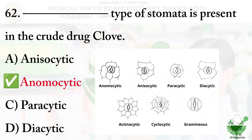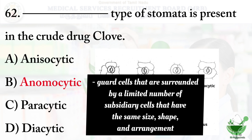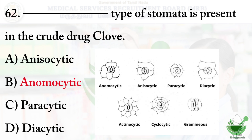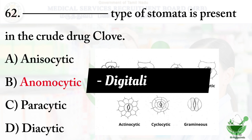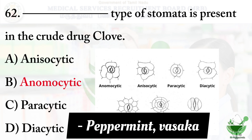The right option is option B, anemocytic. Anemocytic stomata means the guard cells are surrounded by a limited number of subsidiary cells that have the same size, shape, and arrangement — also known as ranunculaceous type. Examples: anisocytic — belladonna and datura; anemocytic — digitalis, lobelia; diacytic — peppermint, vasaka.